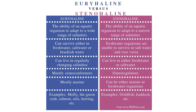Euryhaline organisms can tolerate a wide range of salinities — mostly marine fishes — while stenohaline organisms can only tolerate a narrow range and can be either marine or freshwater. An example of euryhaline is salmon, which travels from freshwater to seawater during its reproductive stage, while an example of stenohaline is goldfish.